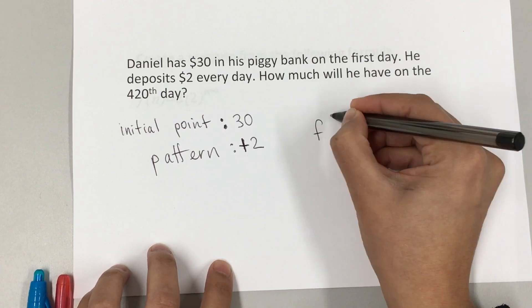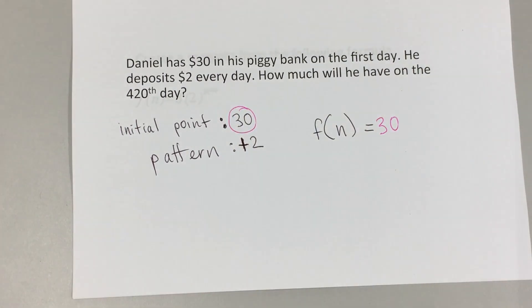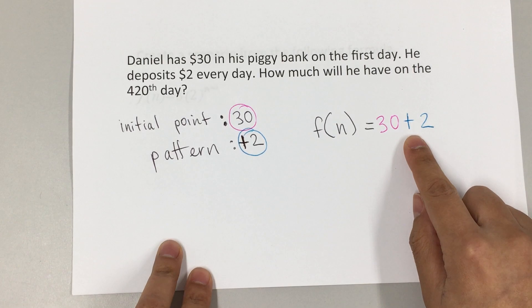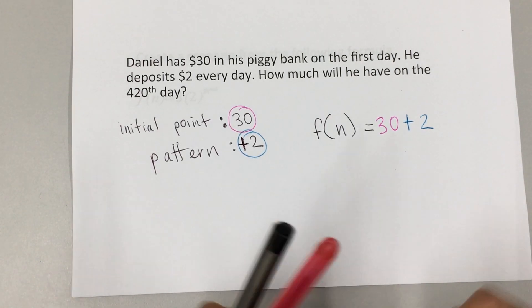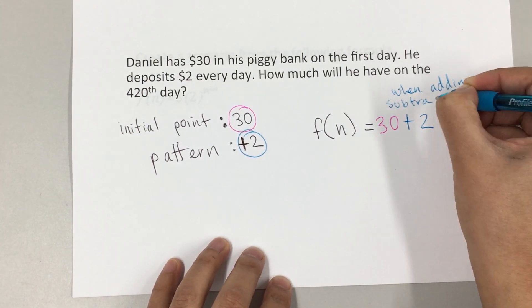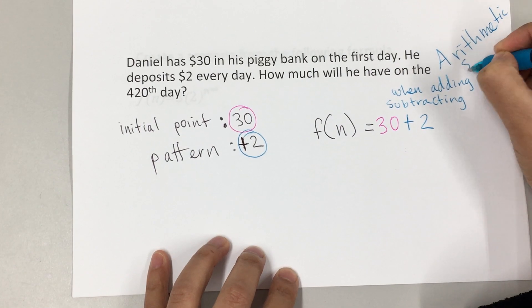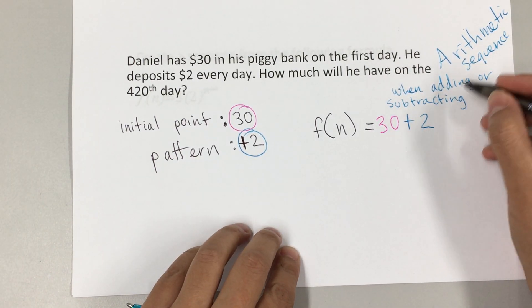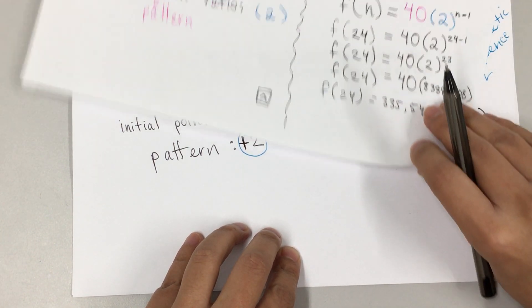My function is going to be f(n) equals the initial point, which is 30, plus the pattern of adding 2 — and remember, when we're adding or subtracting that's going to be an arithmetic sequence. When adding or subtracting, this is called an arithmetic sequence. Whenever it's an arithmetic sequence, we're going to multiply by n minus 1.